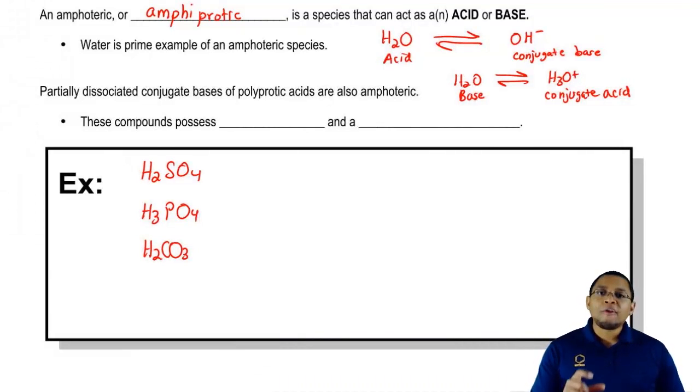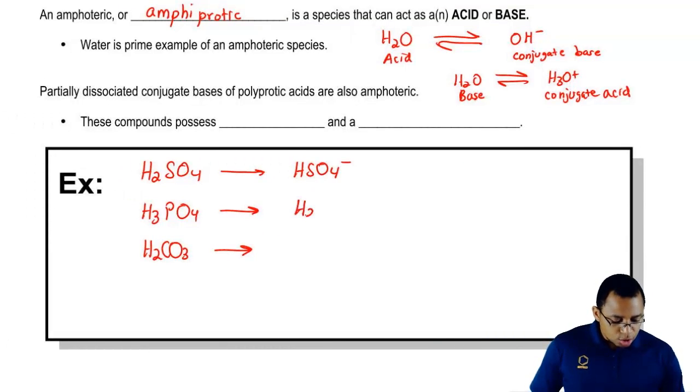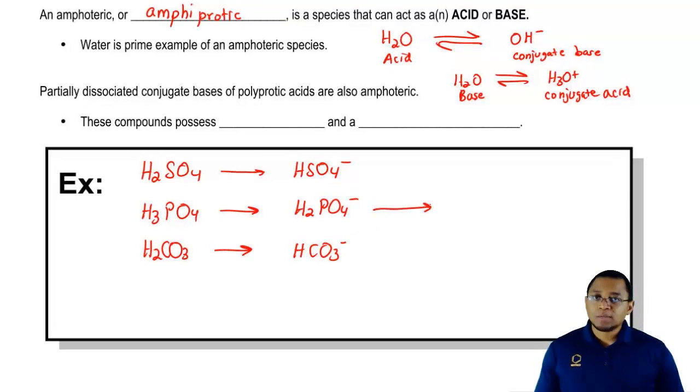We're saying the partially dissolved forms of them. That means when you take off their first H, here we're going to get HSO4-, H2PO4-, HCO3-. This one can actually break down one more to give us an amphoteric species.